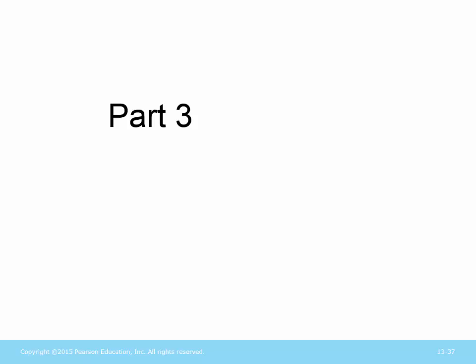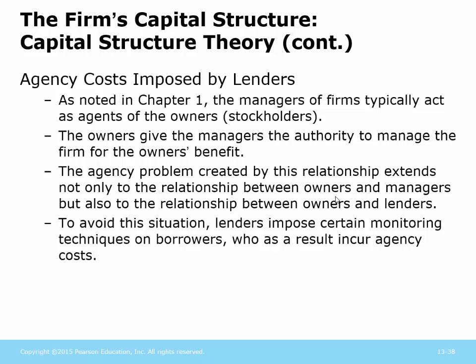We want to finish our discussion of debt and capital structure here. Let's move forward and pull together some of the ends of this discussion. One of the things we have to be concerned about is the concept of agency. We talked about this in the very beginning — there's a conflict between managers and owners. The owners essentially give managers the authority to manage the firm for their benefit, and this agency problem is created because there is a separation between owners and managers.